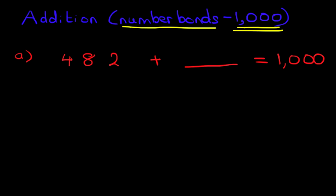We've got 482 plus something equals 1000. Now there's many different methods you can use to work this out. What we're going to do is use our knowledge of number bonds to 100.